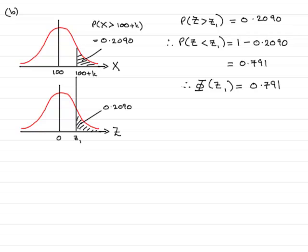And the corresponding Z value is 0.81. So we are 0.81 standard deviations above the mean with this value. In other words, from the tables we find that therefore Z1 equals 0.81.